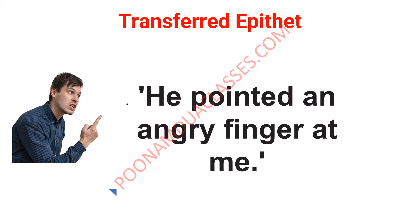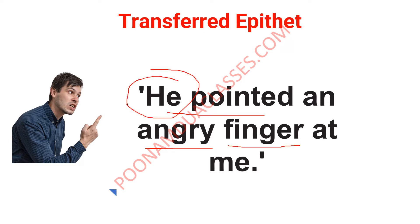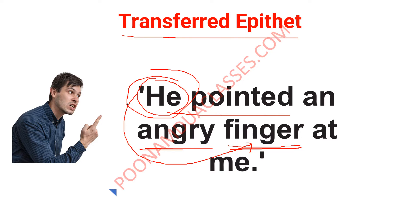Let us go to this example: 'He pointed an angry finger at me.' The epithet here is 'angry,' and it is used for 'finger.' Can the finger be angry? No. The person — he — is the angry one. So actually, 'angry' is supposed to show the quality of the person, but it seems that the finger is angry, which is not the real case. We have transferred the anger from the person to the finger. That is why we call it a transferred epithet.